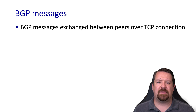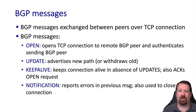BGP messages are exchanged over TCP and consist of four types: the Open message, which establishes a new connection between two peers; Update messages, which are generated every time there is a new or updated path; Keepalives, which are sent in the absence of updates to maintain the long-running TCP connection; and Notifications, which include error messaging or the intent to close the connection.